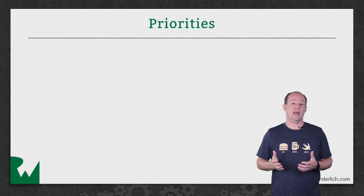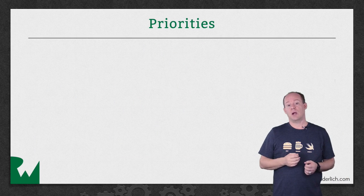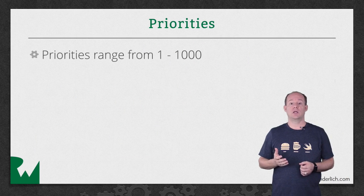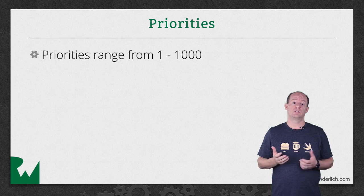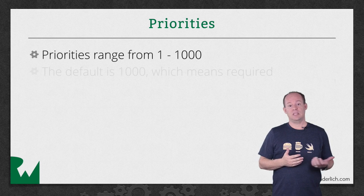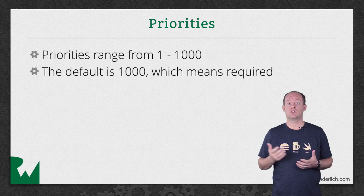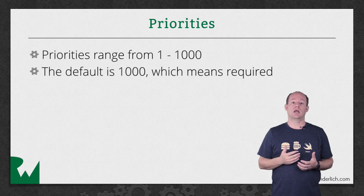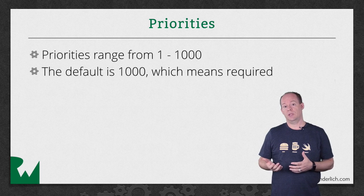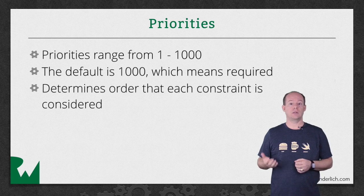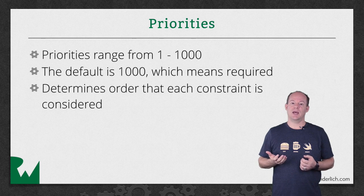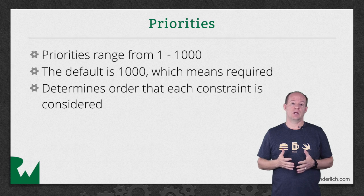Each constraint has a priority. The priority is just a number that ranges from 1 to 1,000. All the constraints that you've created so far have the default priority of 1,000, which means required. You can assign a lower priority to a constraint, and that will determine the order the Auto Layout system uses to consider the constraint. This really only comes into play when two constraints conflict. The priority is the tiebreaker.